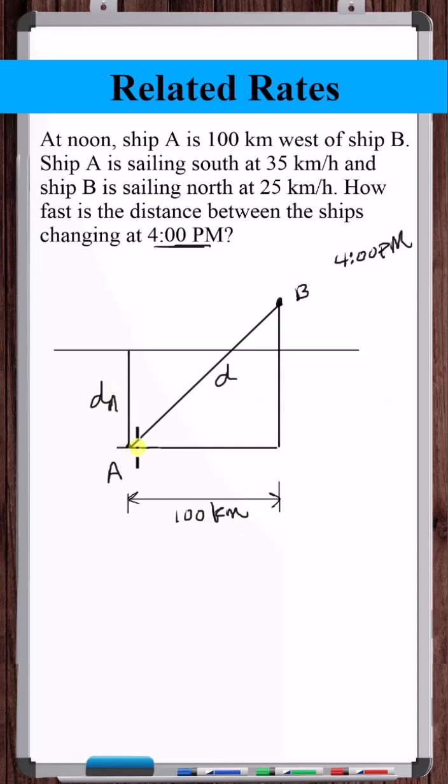Let's call this distance D-A and this distance D-B. We're not putting physical numbers here because this distance is constantly changing. We put 100 here because this distance never changes. This distance is always changing.